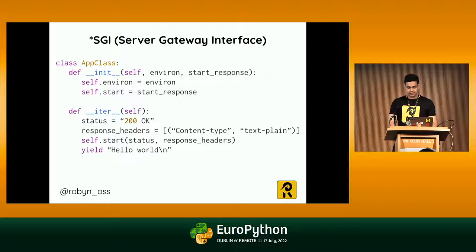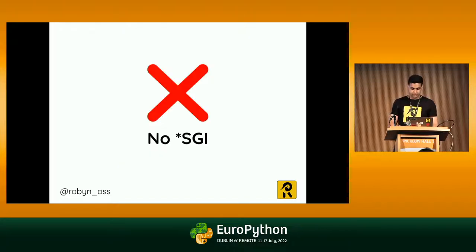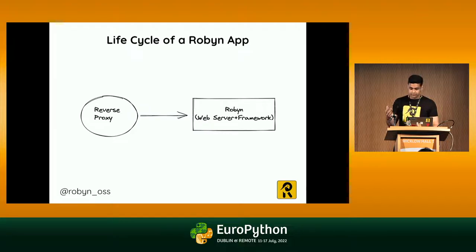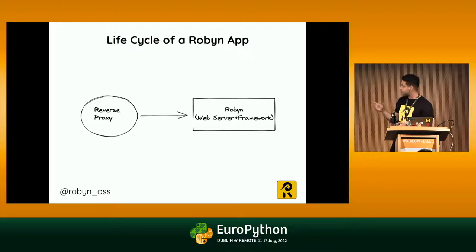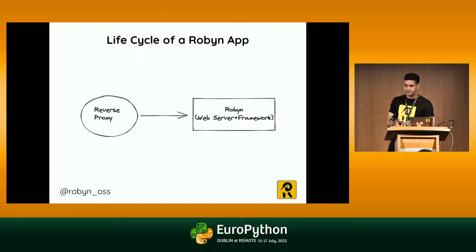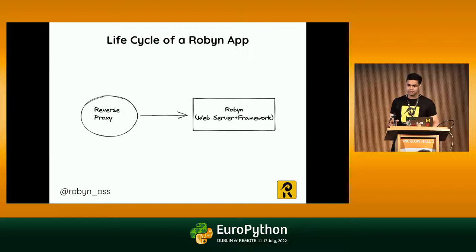WSGI and ASGI have many benefits, but for Robin you do not require a separate ASGI server. Robin comes with a coupled ASGI server, which is one reason it's much faster. The lifecycle of a Robin app is as simple as running python3 app.py. You don't have to choose between Gunicorn, Uvicorn, or Starlette — just run python3 app.py, put it behind a reverse proxy, and you have your working server.